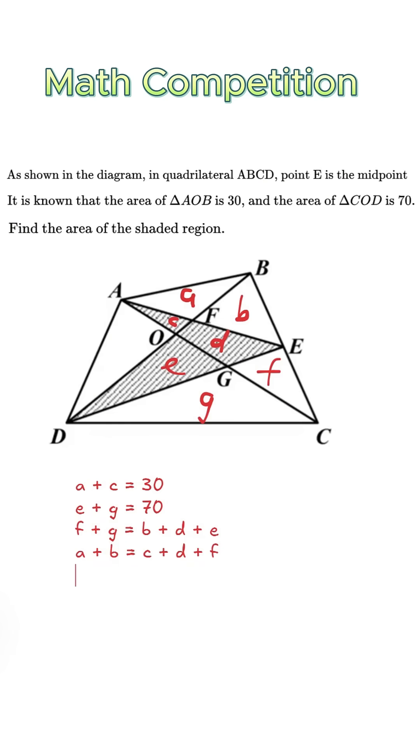Now let's add those two equations. F plus g plus a plus b equals b plus d plus e plus c plus d plus f. We can cancel b and f from both sides. Then we substitute a equals 30 minus c and g equals 70 minus e.